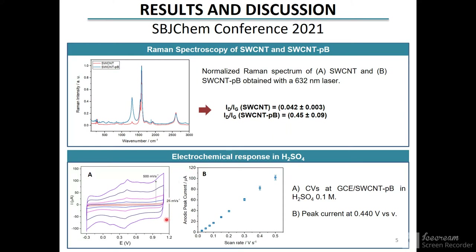The electrochemical response of modified electrodes was analyzed in sulfuric acid solution. Figure A shows the voltammograms obtained at different scan rates that present several anodic and cathodic peaks. Figure B shows that the peak current at 440 mV increases linearly with the increment of the scan rate.